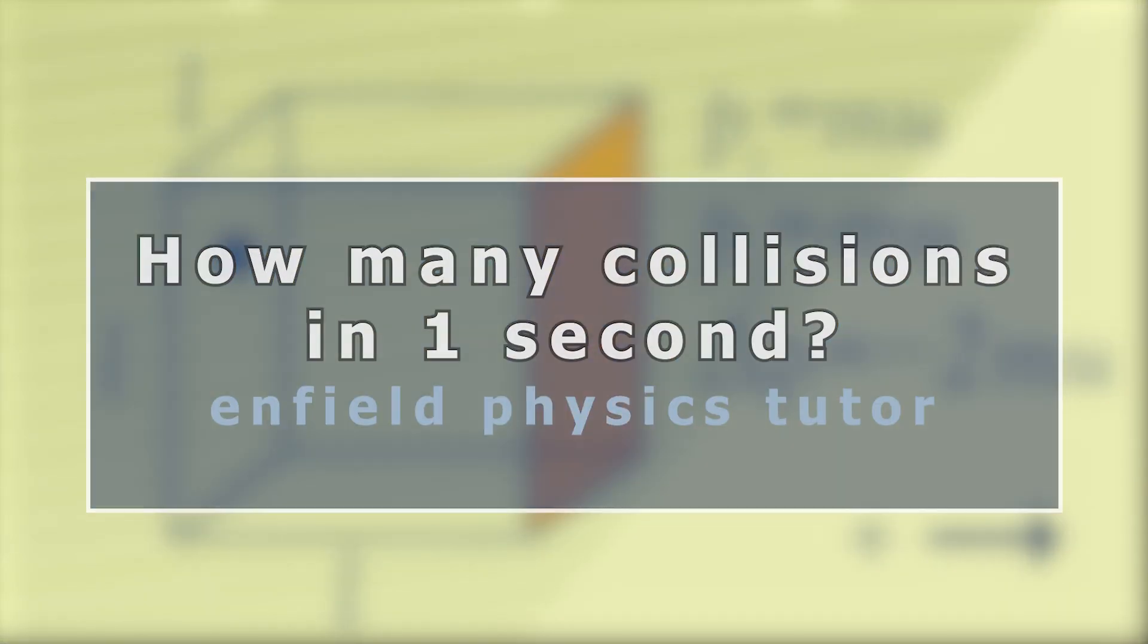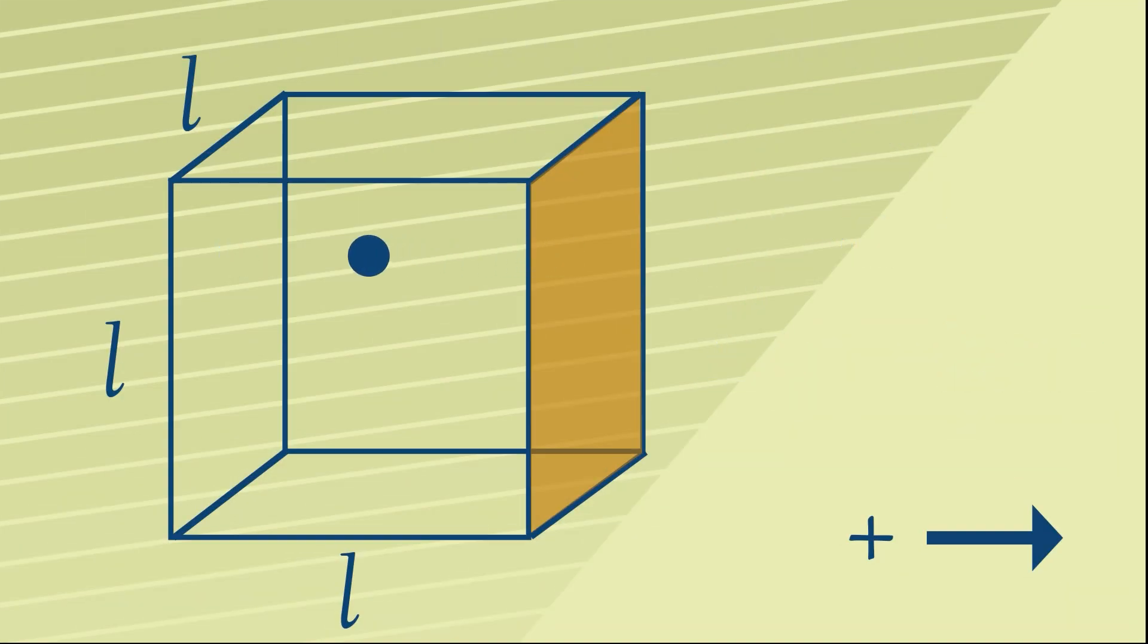Between each collision with the orange wall, the distance that the particle is going to travel will be 2 times L, from the orange wall to the other side and back again. Now we know that speed is distance over time, and rearranging that, we can say therefore that the time to cover that distance is going to be 2L over u.